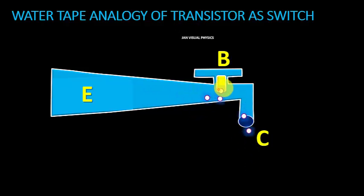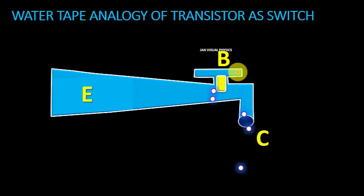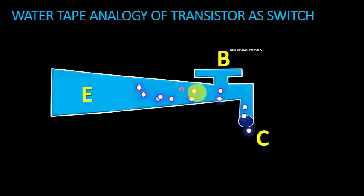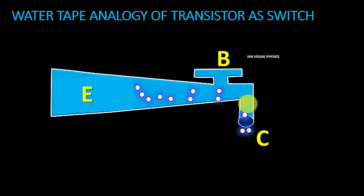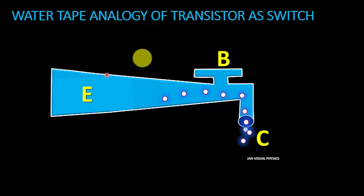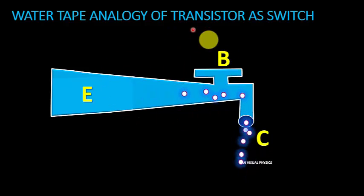If we open the valve fully with the help of the handle, we will see that there will be a maximum flow of water through the tap. A transistor works in a similar way.